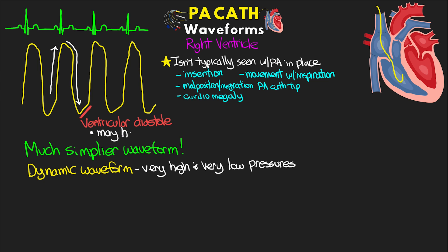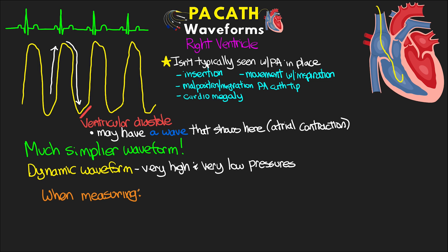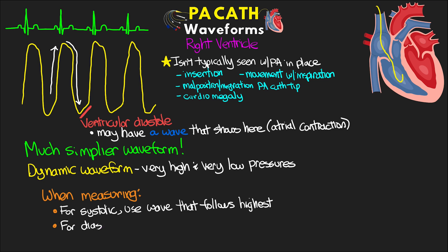Sometimes we may also see an A wave right before the rapid systolic pressure increase, as a result of atrial contraction, though this isn't always noticeable. When measuring this pressure, for systolic we want to use the wave that follows the highest wave, and for diastolic we want to use the lowest point that precedes the systolic wave we just used.